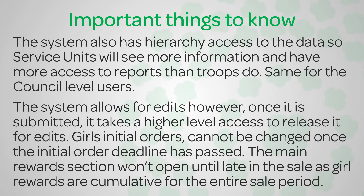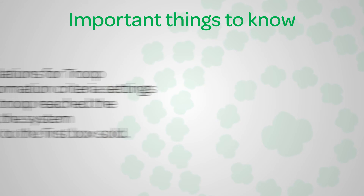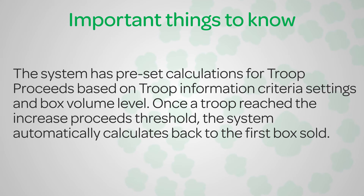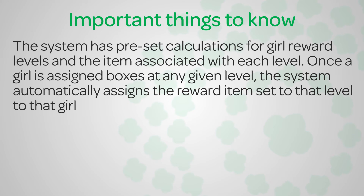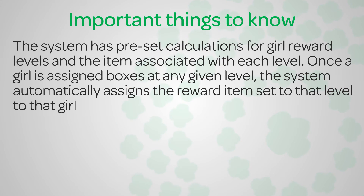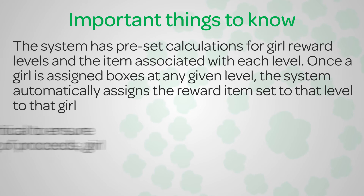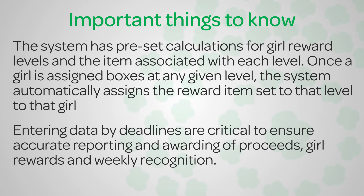Girls' initial orders cannot be changed once the initial order deadline has passed. The main rewards section won't open until late in the sale, as girl rewards are cumulative for the entire sale period. The system also has pre-calculations set for the troop proceeds based on the troop information criteria, settings, and the box volume level obtained. Once a troop reaches the increase proceeds threshold, the system automatically calculates back to the first box sold. The system has pre-set calculations for girl reward levels and the items associated with each level. Once a girl is assigned boxes at any given level, the system automatically assigns the reward items set at that level to that girl. Entering data by the deadlines is critical to ensure accurate reporting and awarding of proceeds, girl rewards, and weekly recognition.